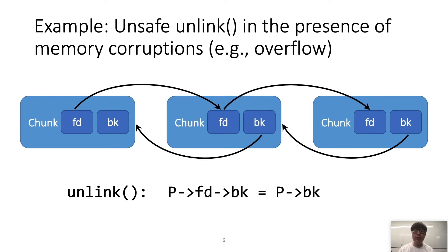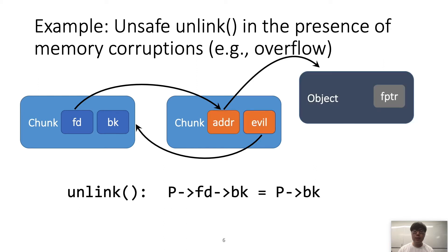If an attacker can corrupt these internal structures with memory corruption, they can abuse this behavior for exploitation. For example, if they override fd into an object with a function pointer and bk with the evil function, the unlink mechanism will be converted into an arbitrary write, modifying the function pointer into the evil function. Finally, the attacker can hijack control by calling the corrupted function pointer.